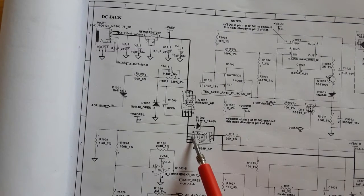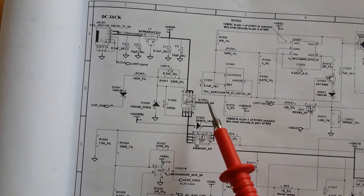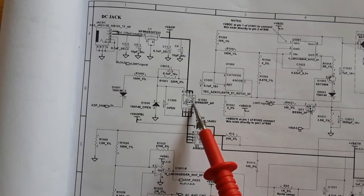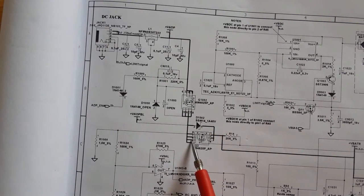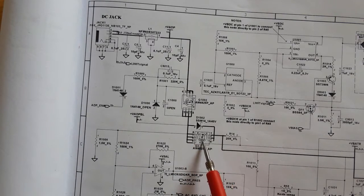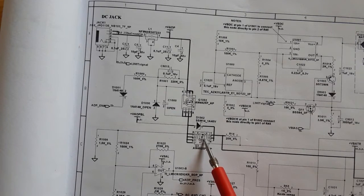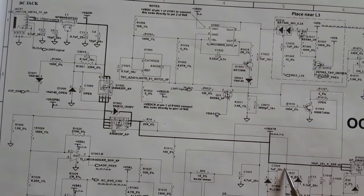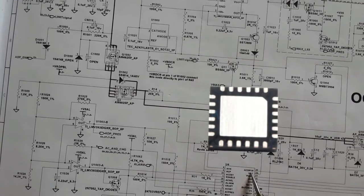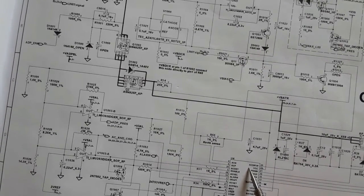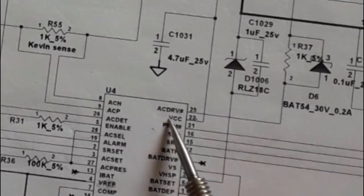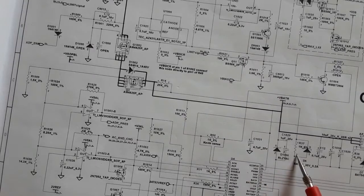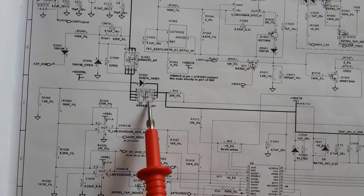The power then passes to the second MOSFET, which also must receive a control signal at its gate. The control signal, called AC drive, comes from the charge IC. The charge IC generates the AC drive signal to the second switch.